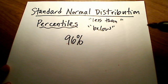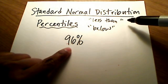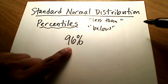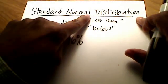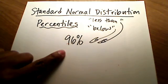What does that mean? That means that 96% of the people who took that test, or 96% of the people who you're referring to in the entire distribution, is below your score, is less than your score.